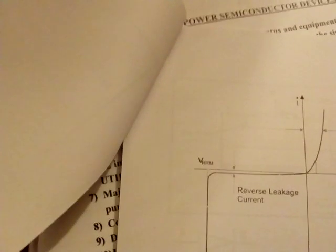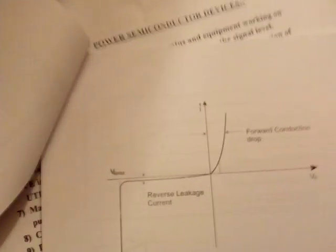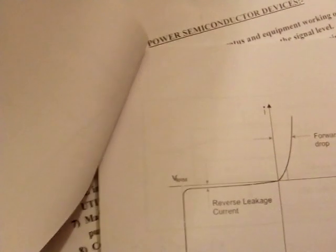So on-state conduction loss will be a little bit more, and the reverse biased voltage will be higher than conventional diode. For example, if other diodes have around 400 to 500 volts as peak inverse voltage, power diodes will have kilovolts, tens of kilovolts, or even more.